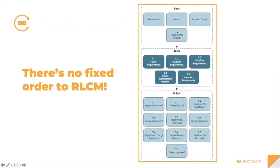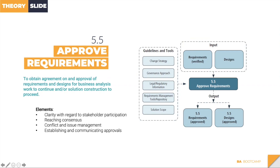There is no fixed order to requirement lifecycle management. The inputs are requirements, designs, and changes to requirements — and in some occasions verified requirements. You can approach these tasks in any order depending on what you need to do. We will start with the approval of requirements, even though it is listed as task 5.5.